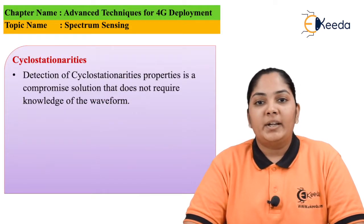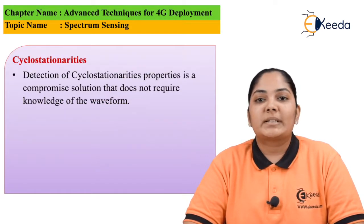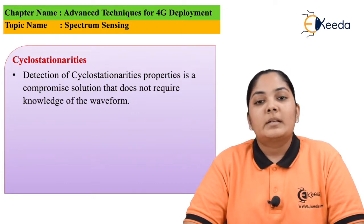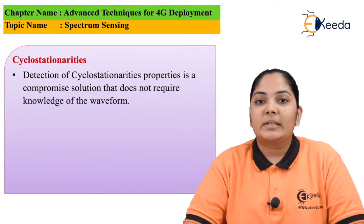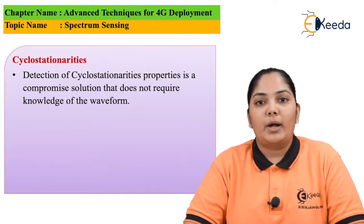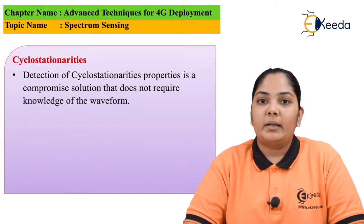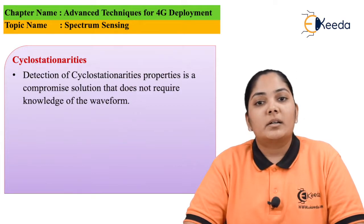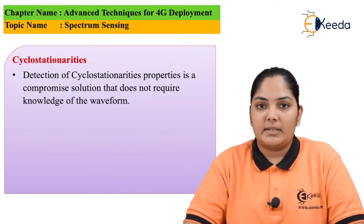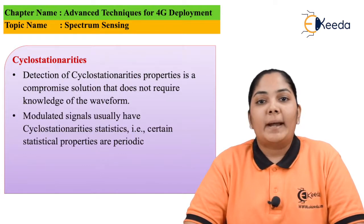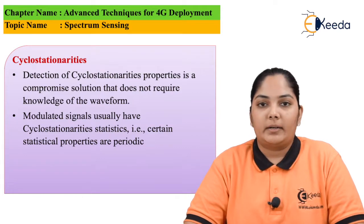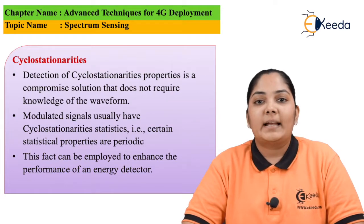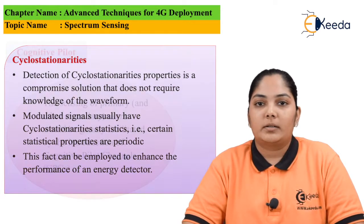The next way to identify using a detector is cyclostationarities. Cyclostationarities use the fact that information about the waveform is not required. Cyclostationarity means that a certain amount of information is periodically repeated in the waveform itself. Once we are able to identify the periodic nature of the waveform, it is easy for us to detect it. This fact can also be used to enhance the performance of the energy detectors.